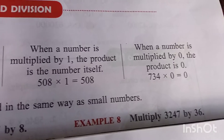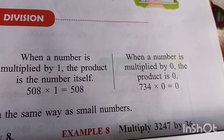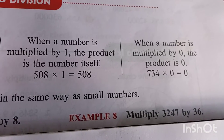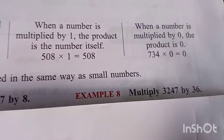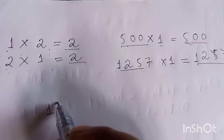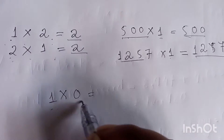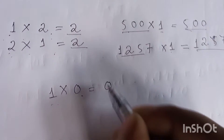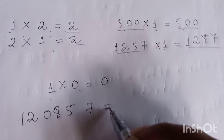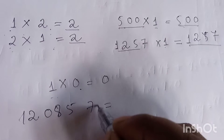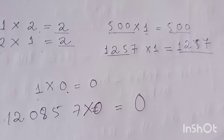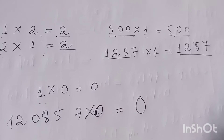The third rule: when a number is multiplied by zero, the product is zero. However small or however big the number is, whenever we multiply it by zero, it becomes zero. For example, even a very big number multiplied by zero becomes zero.